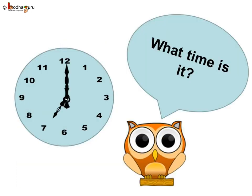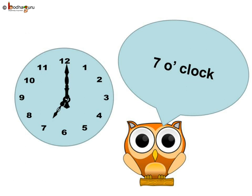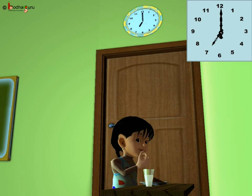Let us try to read time. In the clock shown, the long hand or minute hand points at 12, and the shorter hour hand is pointing to 7, so it is 7 o'clock. When the longer minute hand points to 12, the hour is shown by the shorter hand. Look at what time Sona took her dinner — the long hand is at 12, the short hand is at 7, so it is 7 o'clock, Sona's dinner time.